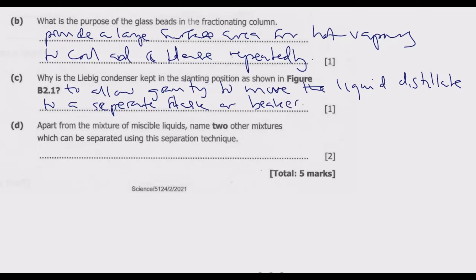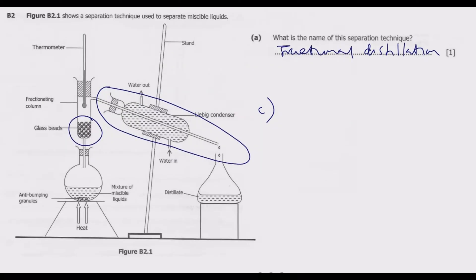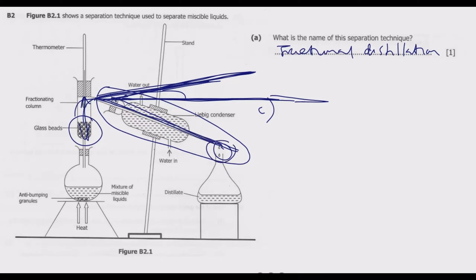So what happens is because of this slanting position, this vapor, once it condenses, it will move easily down to here. If it was upward, the liquid will come down inside. If it is just straight, there will be no pressure to go this direction. So this slanting position allows it to move down here easily. That's basically the purpose.